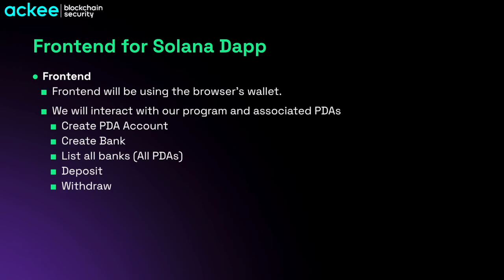The basic functionality will include creation of a PDA account and creation of the bank itself. We'll also be able to list all the banks that are created — fetching all of the PDAs associated with our program — and display them with the bank name and current balance. We'll also add a deposit function: every listed bank will have a deposit button that deposits 0.1 SOL to that particular bank. We'll also add a withdraw function, but only the creator of the bank can call it to transfer money to their wallet.